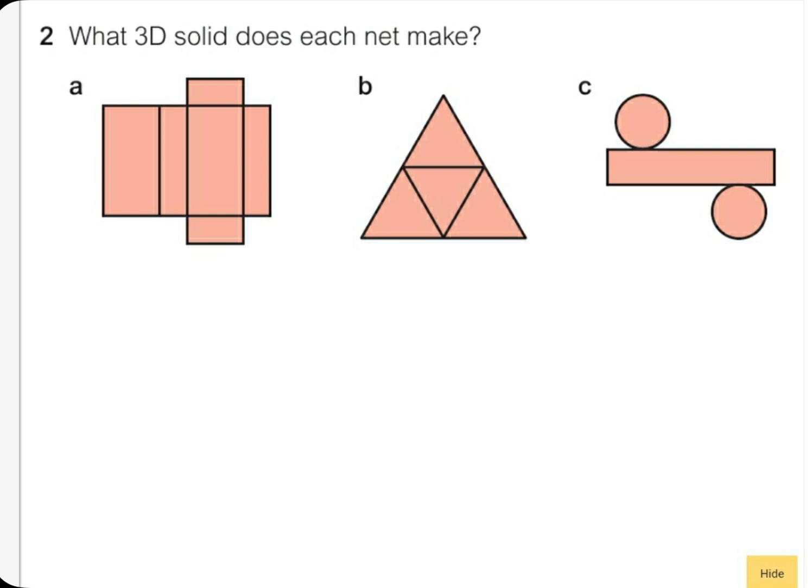So the name of this 3D solid is what? A triangular based pyramid. Now let's take a look at this one. With this one we have two circles and we have a rectangle on the side.